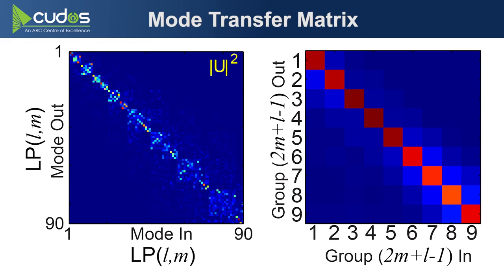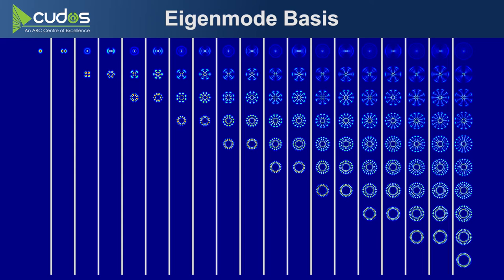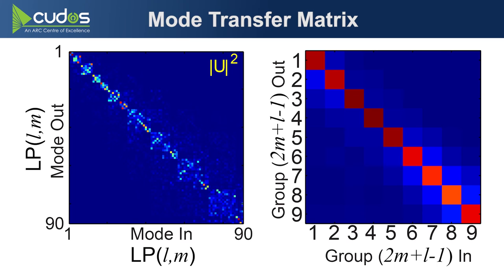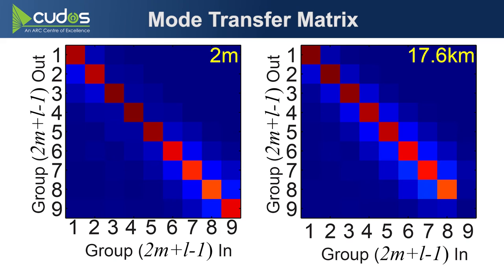And just how simple that matrix is becomes even clearer if you summarize it in terms of the degenerate mode groups of a graded index multimode fiber, which is shown on the right. So in a graded index multimode fiber, you've got LP modes with indices L,M. Then all the modes that share the same value of 2M plus L have virtually identical propagation constants. So in this diagram here, all the modes in the same column have basically the same propagation constant. They're all going to mix like crazy inside the columns. But as it turns out, they're actually pretty much isolated from all the other modes. And that's why we see this sort of identity matrix on the right here. And that tendency for modes to stay within their own mode group is stronger than you might suspect. On the left, we've got a two meter length of fiber. And on the right, we've got a 17.6 kilometer length of fiber. And you can see they both look very much like the identity, except in the 17.6 kilometer length, the highest order mode group has actually become cut off over that distance.